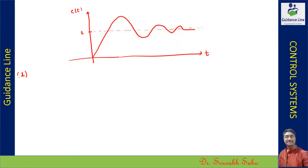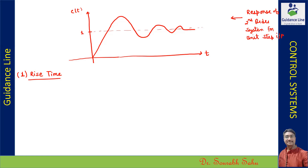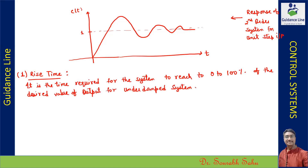The first parameter is the rise time. We have the response of the second order system over here. The rise time is the time required for the system to reach from zero to a hundred percent. We want the response to reach a value of one over here.